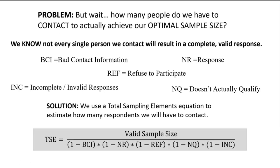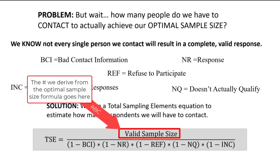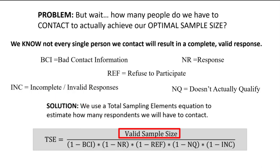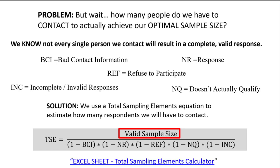The total sampling elements equation is used to figure out how many people we have to contact to reach that valid sample size number we've already determined. We'll use some Excel spreadsheet exercises, if you're in my class, to understand exactly how this particular formula functions.